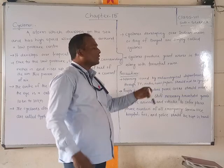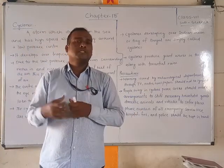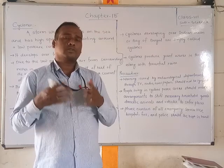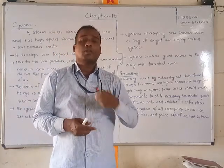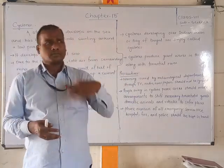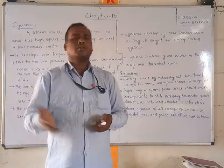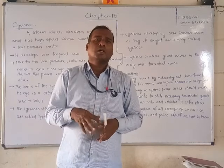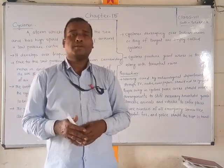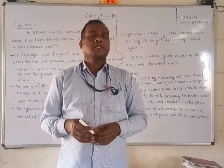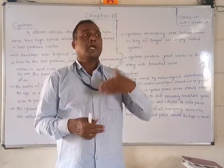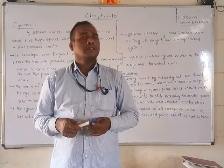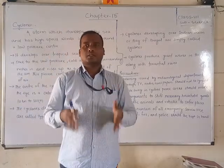Cyclones produce giant waves in the sea along the coastal range. They cause heavy rains, uproot large trees, and damage houses, roads, electricity lines, bridges, and agricultural fields. Everything within the cyclone's radius can be severely damaged. It is very dangerous, with heavy pressure, high wind speeds, and heavy rains — truly a natural calamity.